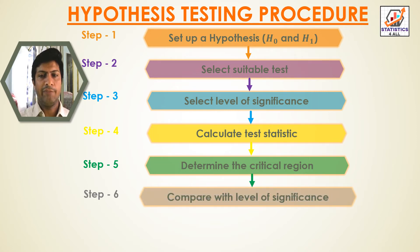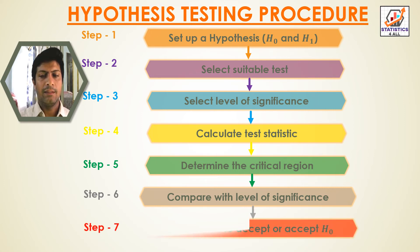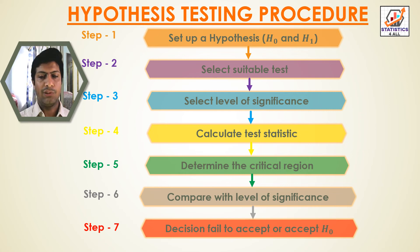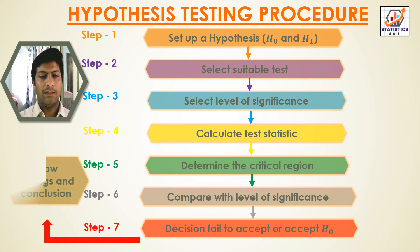Step 6: compare with the level of significance. Step 7 — decision: fail to accept the null hypothesis, or accept the null hypothesis. Finally, draw findings and conclusions.